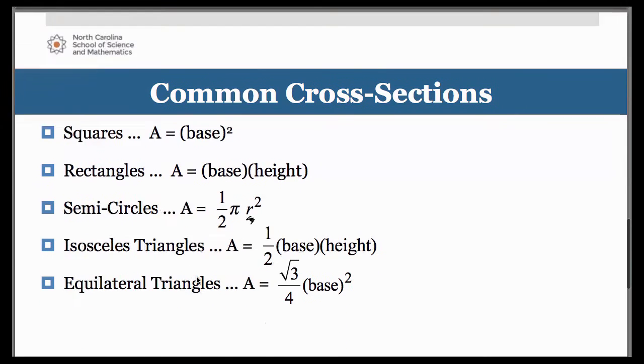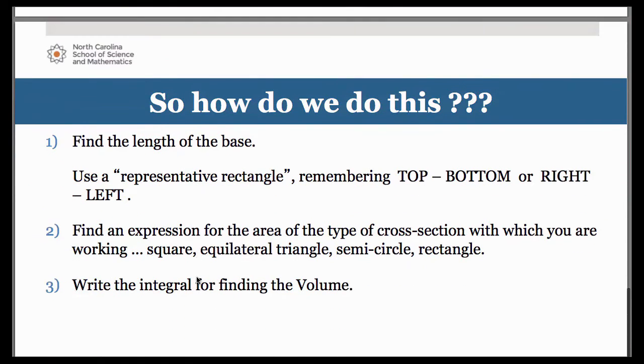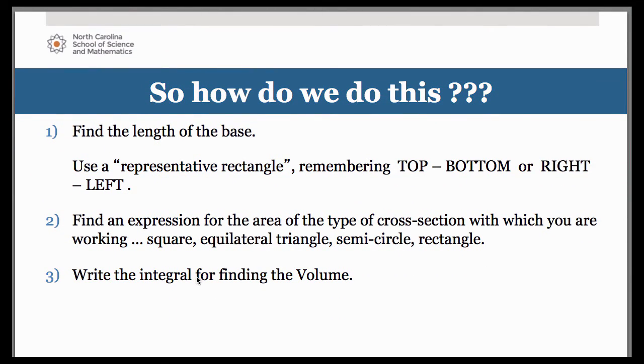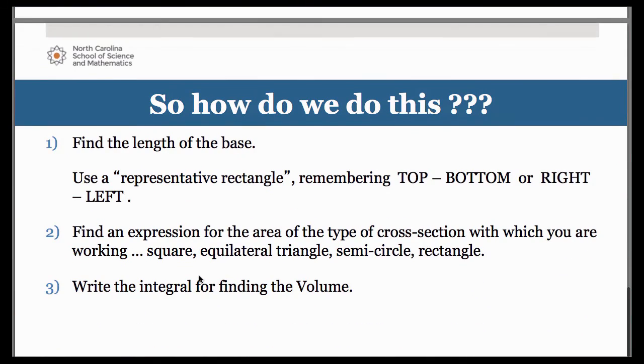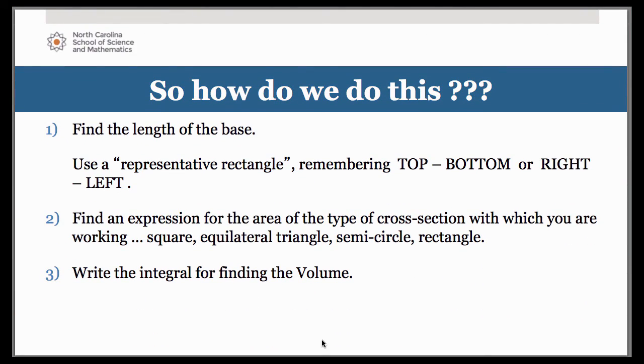So the basic process is a three step simple one. The first thing you're going to want to do is come up with an expression for the length of the base of the type of cross section you're told you have. You're going to use that representative rectangle idea to come up with your expression for the length of that rectangle. You will use that top minus bottom or right minus left idea we've talked about before. Secondly, you're going to find an expression for the area of the type of cross section that you're working with. Finally, you're going to set up your integral for finding the volume. You can either evaluate it by hand by finding the antiderivative and evaluating that way, or you are free to use your calculator to do that evaluation.